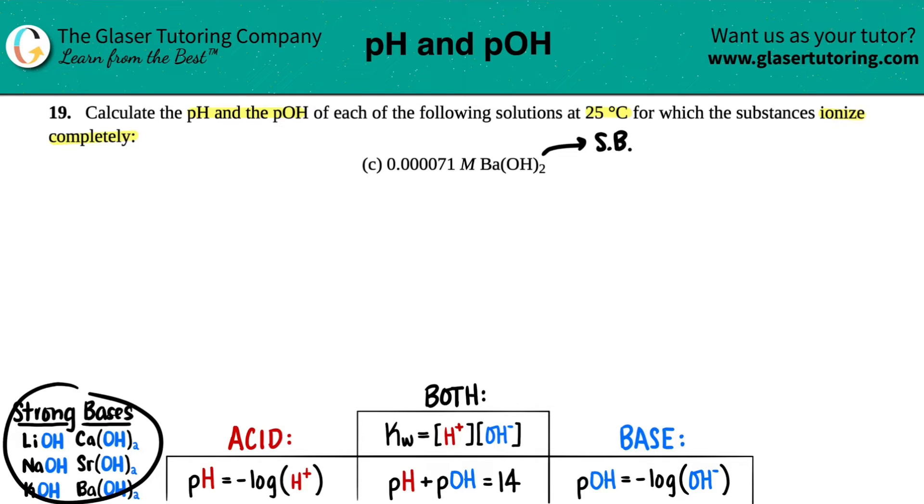And I listed out all of the strong bases. There's six of them. So here's barium hydroxide, it's one of the last out of the bunch. All of these six strong bases will ionize completely. So you'll do the same type of idea if they gave us any of these other five strong bases.